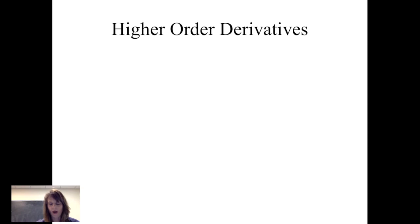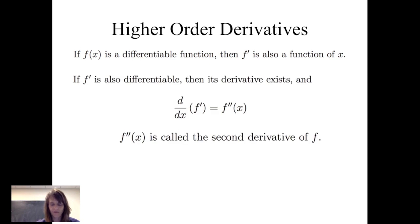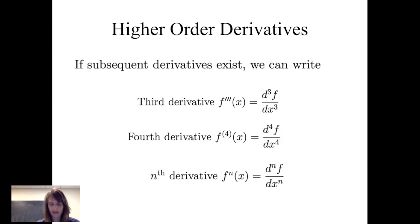We can also take higher order derivatives. If I have a function f and it's differentiable, then its derivative we can also treat as a function of x. So f prime is a function of x, and therefore I can consider taking its derivative. I consider the derivative of f prime with respect to x and rewrite that as f double prime of x, which is the second derivative of f — the derivative of the derivative. This process can continue if the subsequent derivatives exist. We write the third derivative as f triple prime of x. The fourth derivative we denote using f with parentheses 4 evaluated at x. Or if we've got an nth derivative, we say it's the nth derivative of f with respect to x.